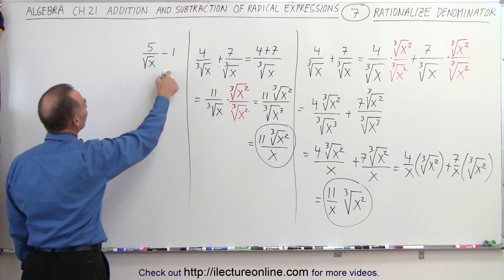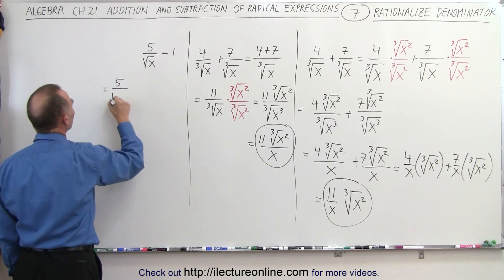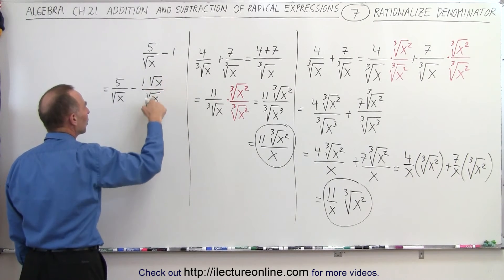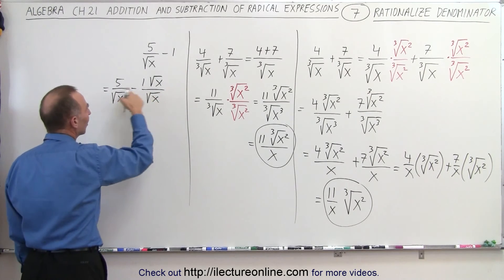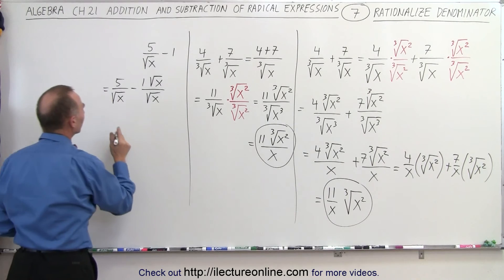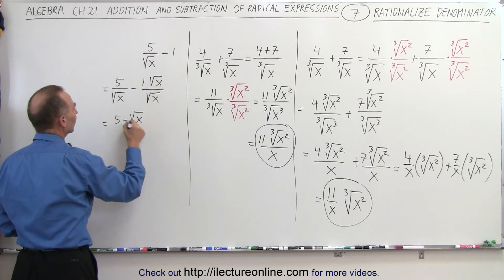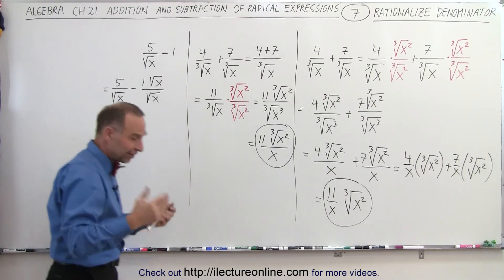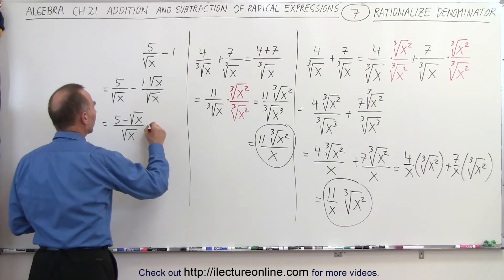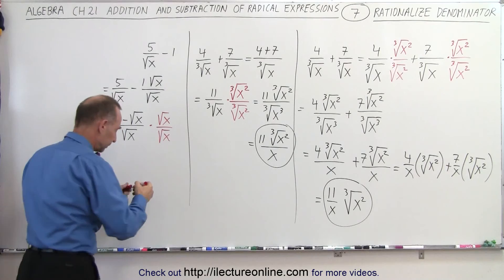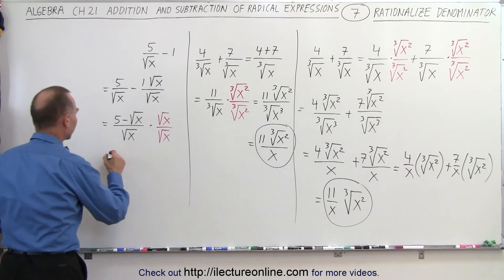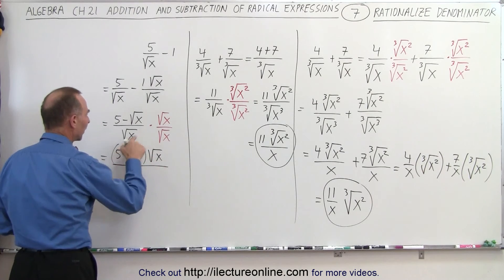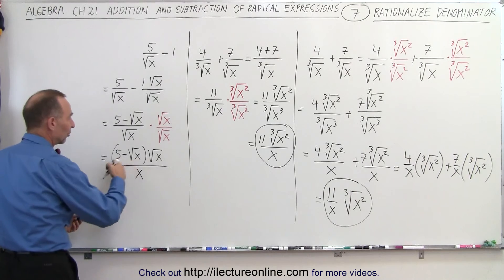We're going to write this over a common denominator. So this could be written as 5 over the square root of x, minus 1, times the square root of x divided by the square root of x. What I've done is multiplied both the numerator and denominator by the square root of x so I could have similar denominators. Now I can write all that over a common denominator: this is equal to 5 minus the square root of x divided by the square root of x. I still want to get rid of that radical in the denominator, so I'm going to multiply both the numerator and denominator by the square root of x.